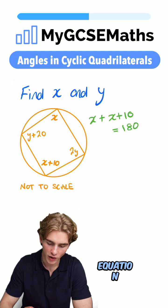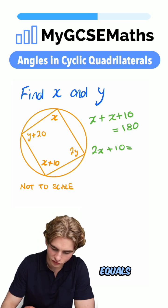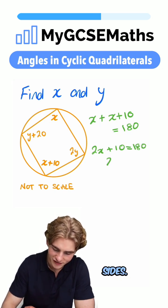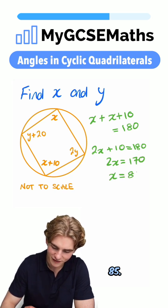This is actually an equation which we can solve. x plus x is 2x, so we have 2x plus 10 equals 180. We can take 10 from both sides. 2x equals 170, and then we can divide both sides by 2. We're going to get x equals 85.